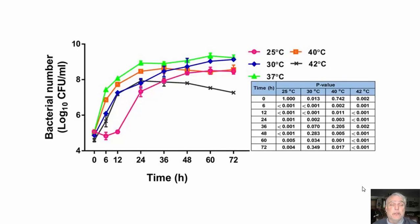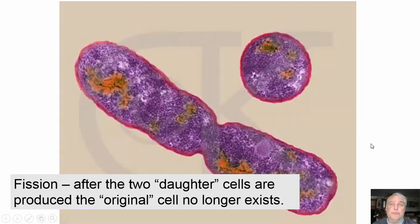This chart shows bacteria growth under different temperatures. At the coolest temperature shown — 25 degrees Celsius — bacteria growth is much slower. At 37 degrees Celsius, bacteria grow much, much faster. Bacteria in general tend to like warm, moist places, like your mouth. With asexual reproduction via fission, the two daughter cells are produced from an original parent cell, and that original parent cell no longer exists after fission.